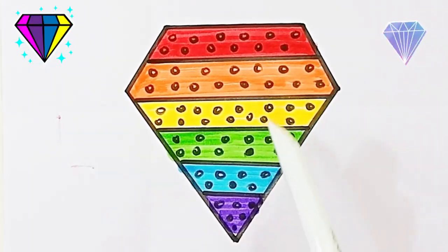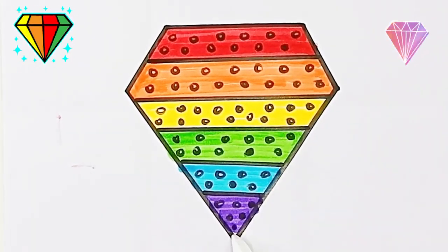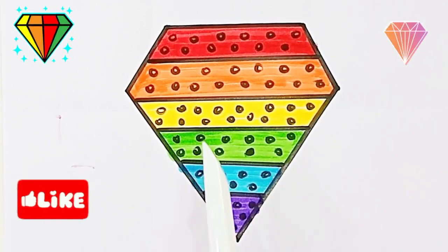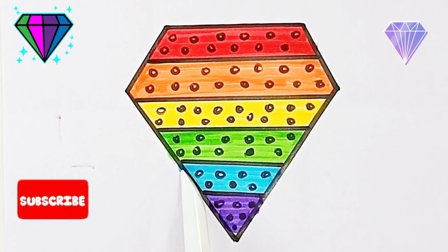Red color, orange color, yellow color, green color, sky blue color, purple color, these are all rainbow colors. This is diamond, diamond shape, diamond shape pop it, diamond pop it.